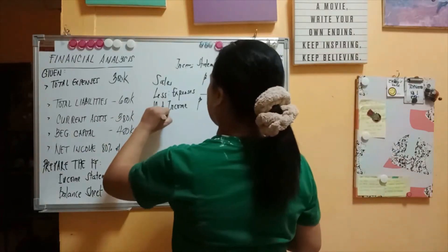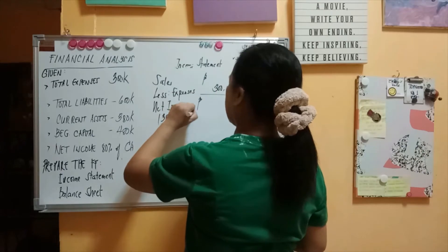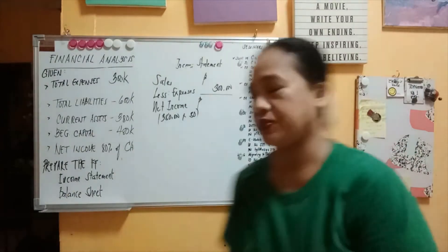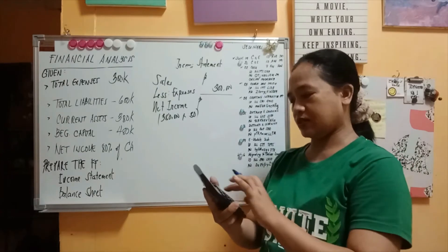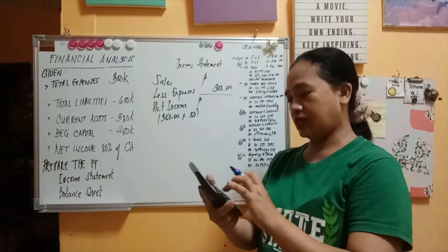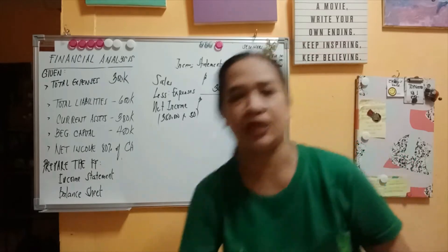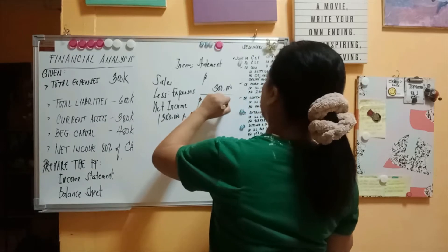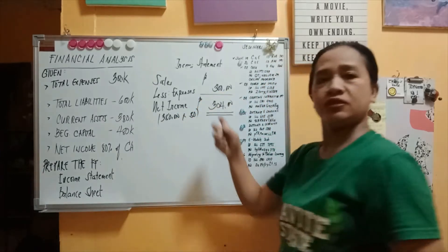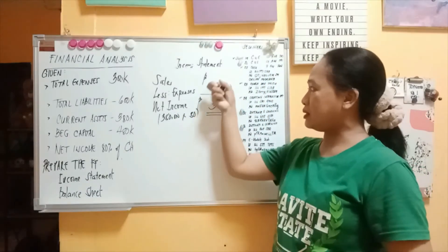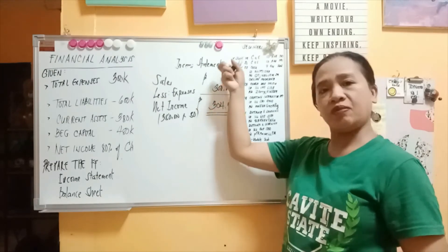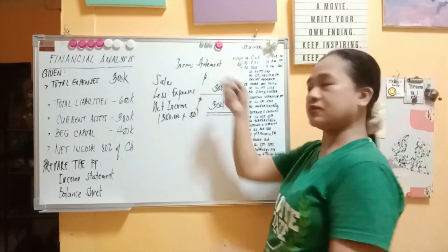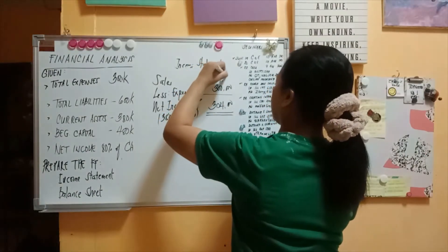We already have the net income, which is 80% of current assets. So we multiply 380,000 by 80%, which equals 304,000. This is our net income. To get the amount of sales, we add net income plus expenses: 304,000 plus 300,000 equals 604,000. That is our total sales.